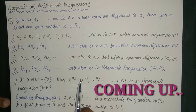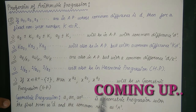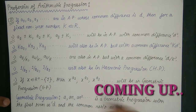The values of x to the power a1, x to the power a2, x to the power a3, till x to the power aN — where the values of a1, a2, a3 till aN are in AP — in that case this series will be in geometric progression.